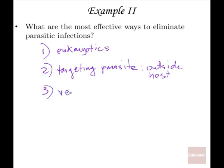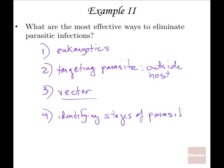If the parasite has a vector, that's another important target. One of the ways that the incidence of malaria is reduced is by draining swamps, applying pesticides to eradicate mosquitoes, or putting oil on the water to influence the life cycle of a mosquito. If you can eliminate the vector, then you've eliminated the disease.